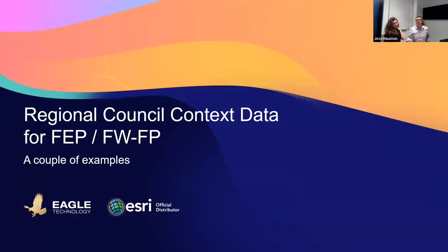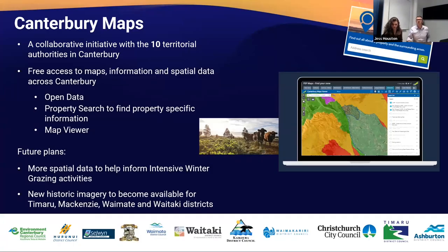I wanted to look at a couple of examples briefly — bearing in mind there are 16 regional councils, but we'll share information on what portals are available. Canterbury Maps — we've seen that already. Jess showed the FEP Maps and Find Your Zone tool, plus the open data site, which has access to a range of data sets including Christchurch City Council data since it's part of the Canterbury Maps Consortium. They also have future plans to enhance this, including making spatial data available around intensive winter grazing activities, and bringing more historic imagery from other parts of the Canterbury region.